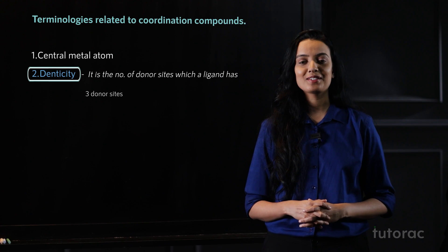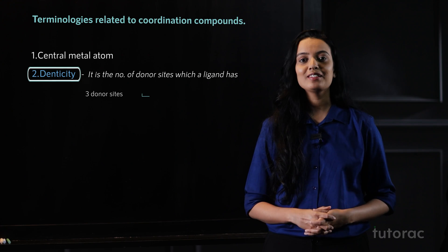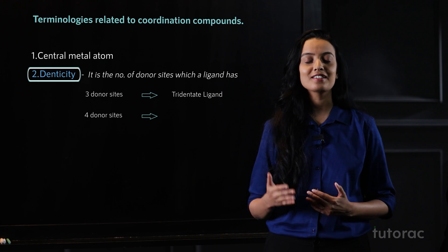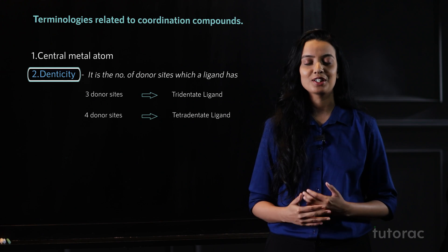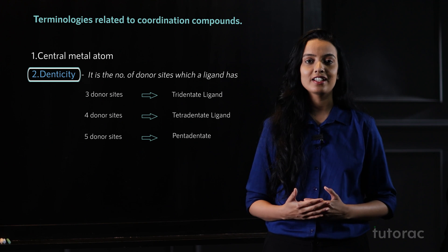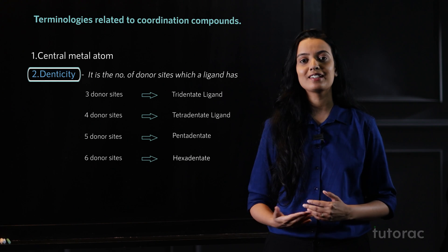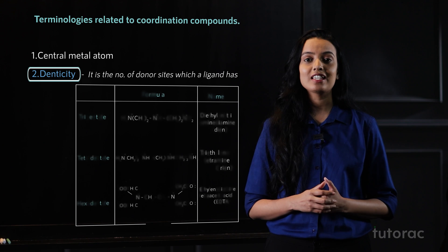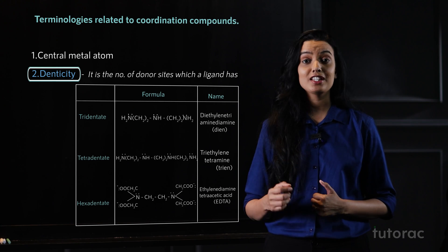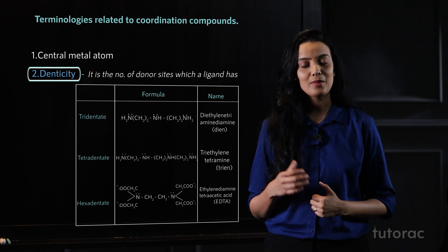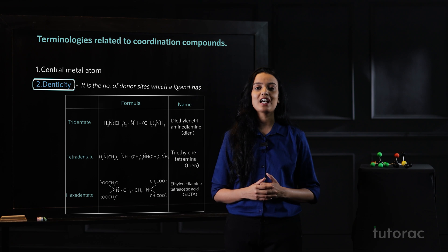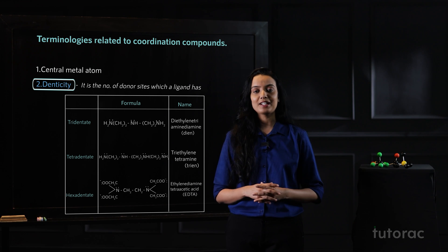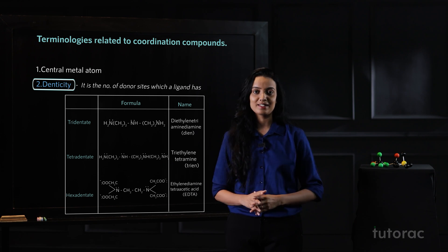If there are three donor sites in a ligand, it is known as a tridentate ligand. Four donor sites makes it tetradentate, five donor sites pentadentate, six donor sites hexadentate, and so on. You can see the formula for each ligand in the table. All ligands which have two or more donor sites come under the category of polydentate ligands.